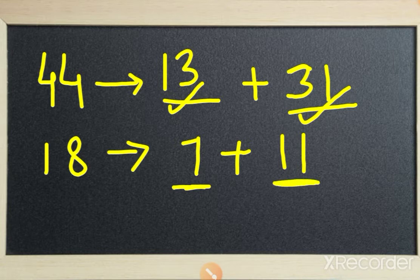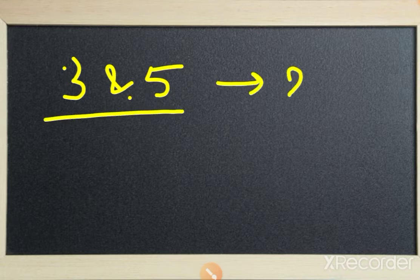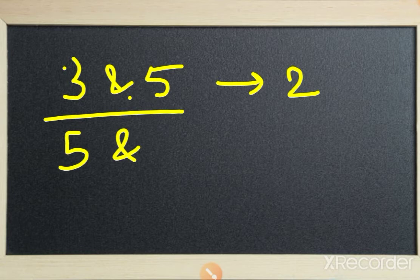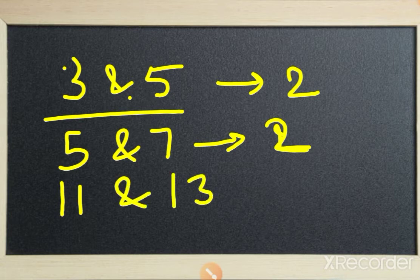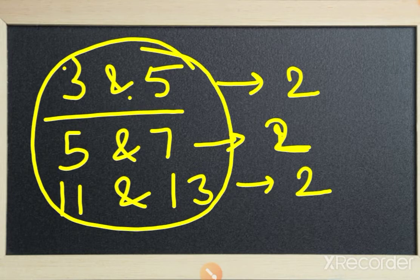Next question: give 3 pairs of prime numbers whose difference is 2. You have to make any pairs whose difference is 2. For example, if we take 3 and 5, their difference is 2. If we take 5 and 7 — both are prime numbers — their difference is 2. Take 11 and 13, their difference is also 2. So these are 3 pairs of prime numbers whose difference is 2.